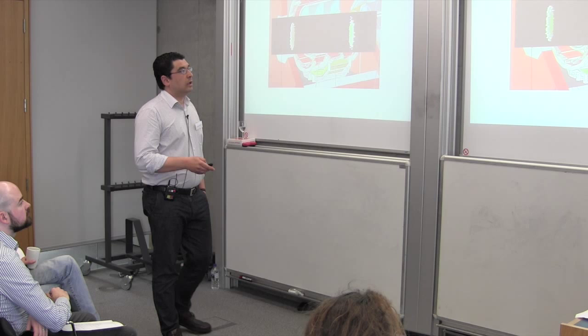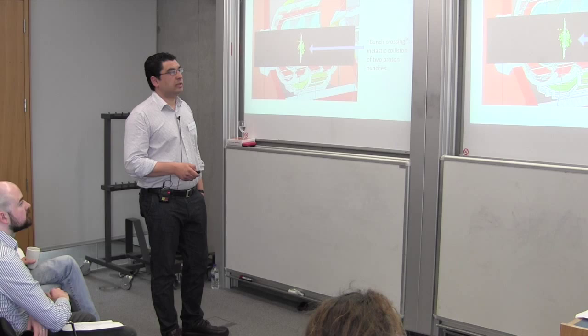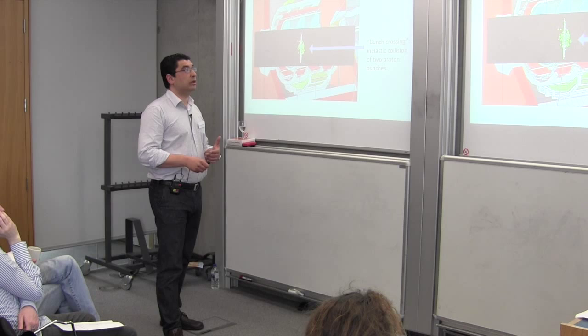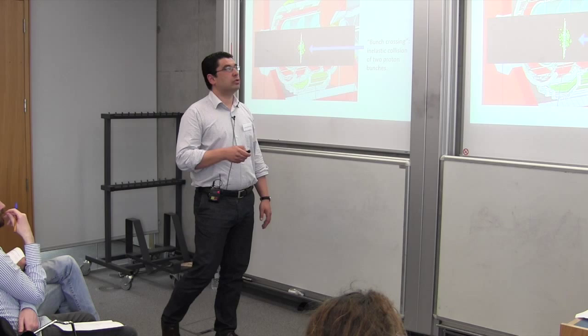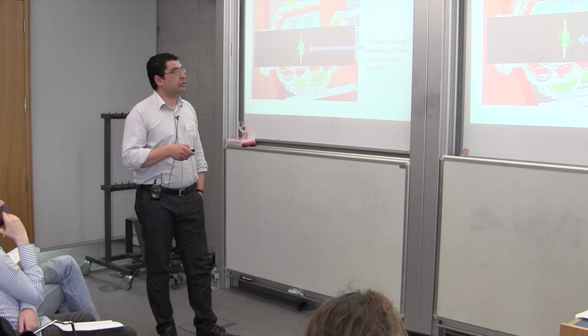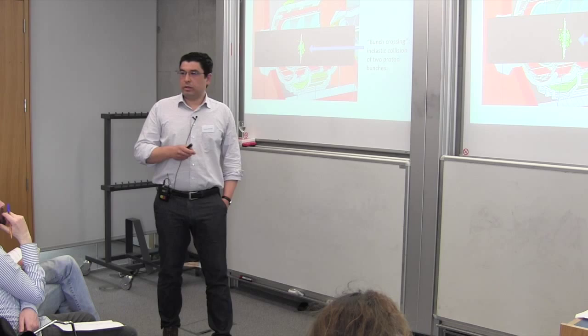When proton bunches collide, we have a bunch crossing — an inelastic collision of two proton bunches. The term 'event' refers to the record of all the decay or interaction products from a given bunch crossing. The event rate is 40 million events per second. The aim of the data selection or acquisition process is to select interesting events from these collision events.